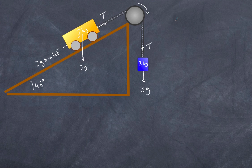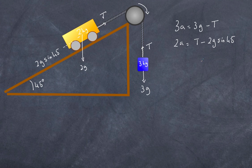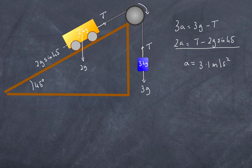Applying Newton's second law: 3A equals 3g minus T, and 2A equals T minus 2g sin 45. When you add these and solve, you get an acceleration of 3.1 m/s². Once we get to that step it's straightforward, and I can substitute the acceleration back into one of the equations to find T.